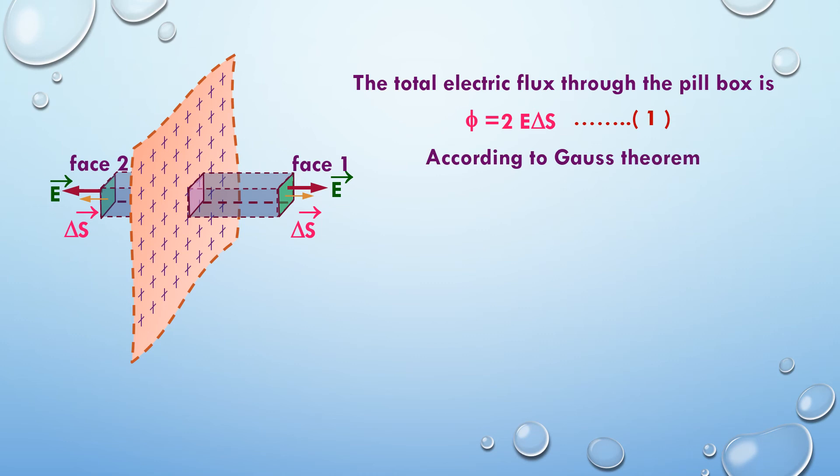Now, according to Gauss theorem, flux is equal to 1 upon epsilon naught into Q, which we call it as equation 2. And now, comparing equations 1 and 2, 2E delta S should be equal to 1 upon epsilon naught into Q.